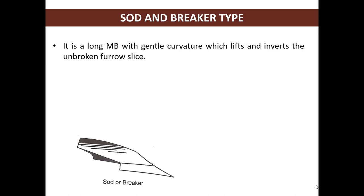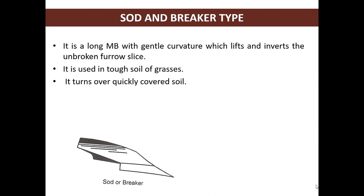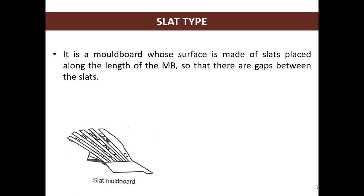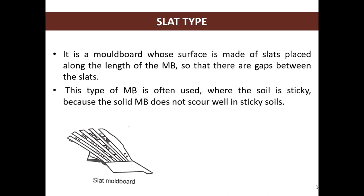Sod and breaker type is a long moldboard with gentle curvature which lifts and inverts the unbroken furrow slice. It is used in tough soils with grasses and turns over quickly covered soil. This is very useful where complete inversion of soil is required by the farmer. Slat type is the moldboard whose surface is made up of slats placed along the length of the moldboard, with gaps between the slats. This type is often used where the soil is sticky because the solid moldboard does not score well in sticky soils.